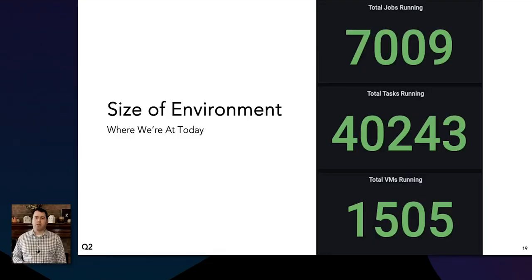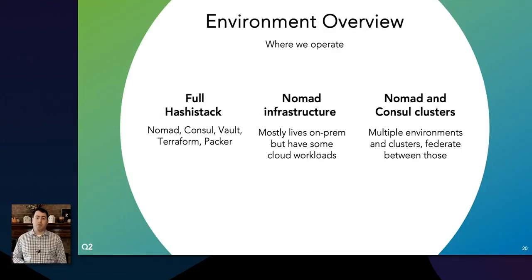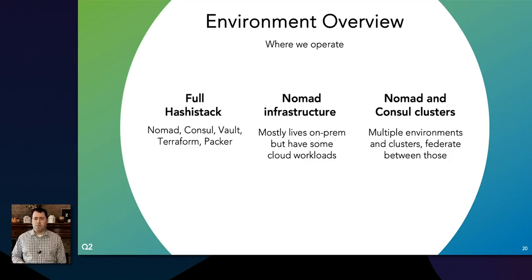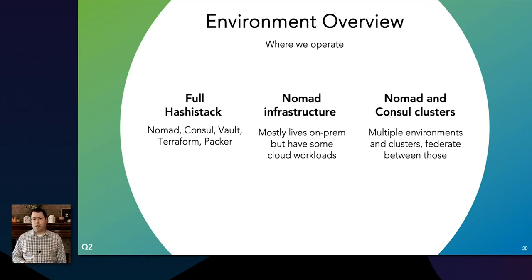Today we're running over 7,000 jobs in Nomad across the environments, which translates into over 40,000 tasks across 1,500 VMs. We use most of the HashiStack — Nomad, Consul, and Vault — and we also use Terraform and Packer for VM management. Most of our Nomad infrastructure lives in on-prem, very traditional but modern data centers, though we do have some workloads with cloud providers as well. We have several Nomad and Consul clusters across multiple environments and we federate those between data centers.